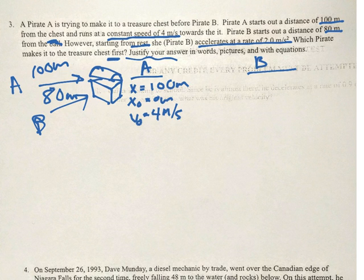Which pirate makes it to the treasure first? We care who gets there first. Let's draw it. We have a chest that both pirates are trying to get to. Pirate A must go 100 meters. Pirate B only has to go 80 meters. Remember, we got 2 objects, that means you must have 2 problems. So we're going to have A and B information.